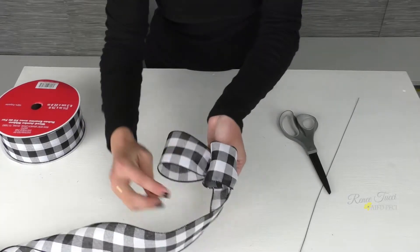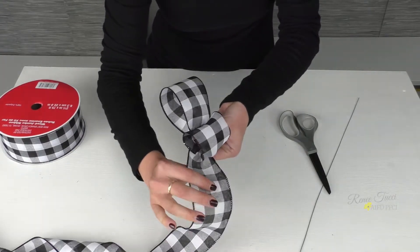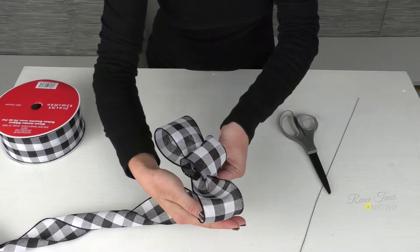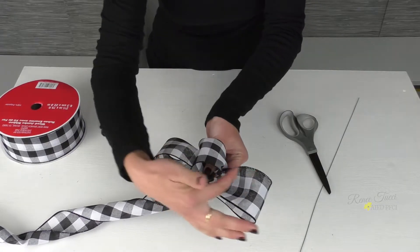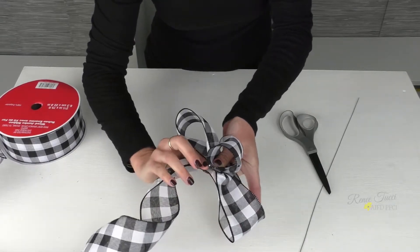Okay, so we've got one side loop. Now we're going to try to create a matching loop on the other side. So we're going to run this about the same length as best we can as our first loop and then back to the center area. Again, we'll give a twist.